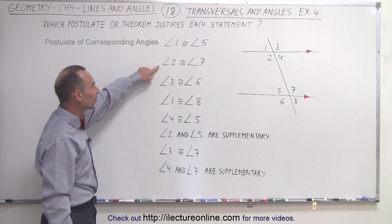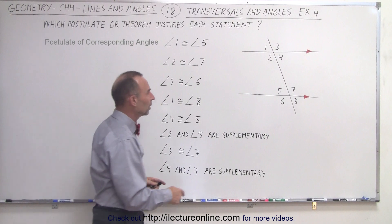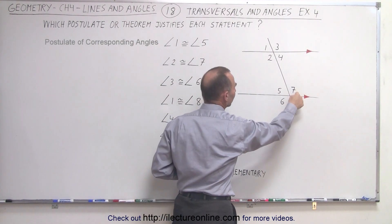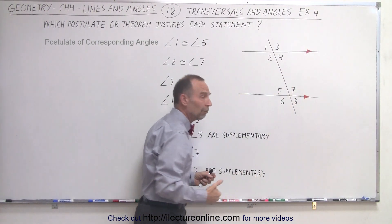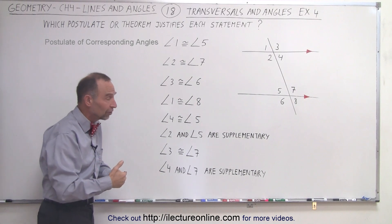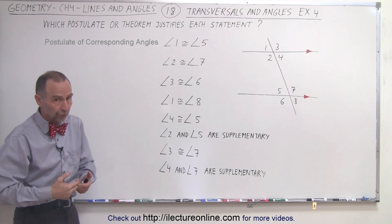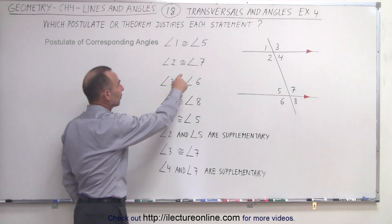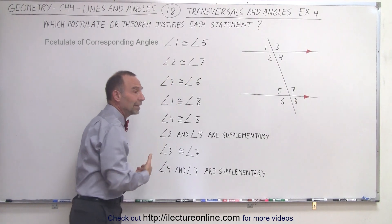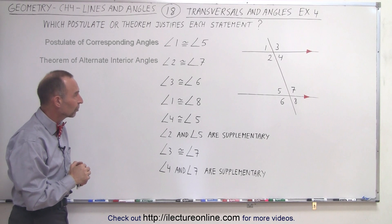The second statement tells us that angle two is congruent to angle seven. Here's angle two and here's angle seven. The theorem of alternate interior angles tells us that they must have the same measure, therefore they are congruent, and so we can make the statement based on the theorem of alternate interior angles.